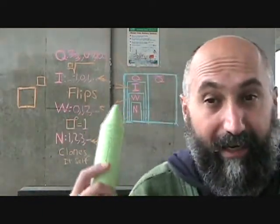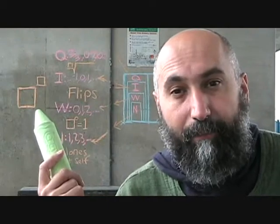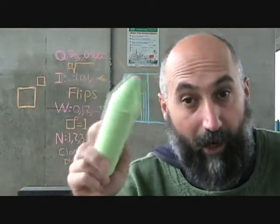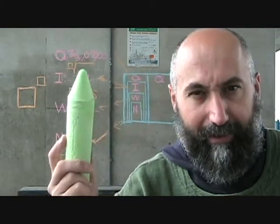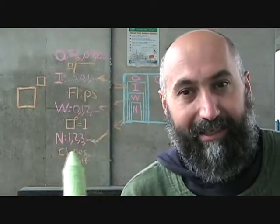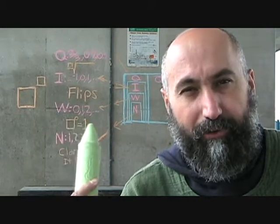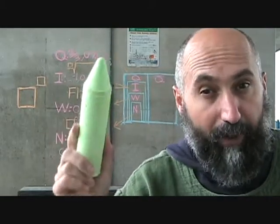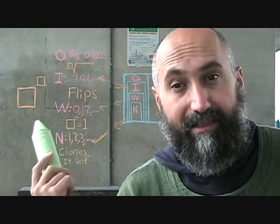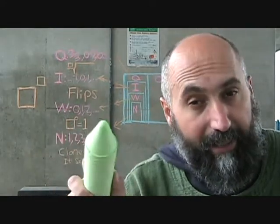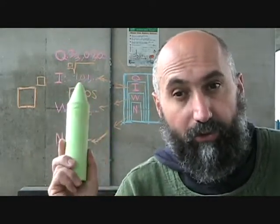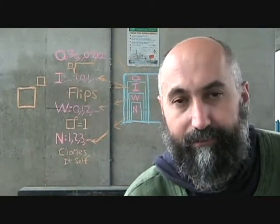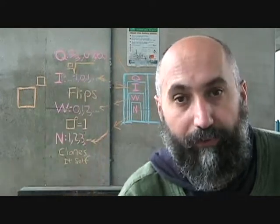So if you have any number in the base and put it to a fractional exponent, the top number — the numerator — acts like the natural numbers. The denominator in the exponent goes to the root. For example, 5 to the power of 2 over 3.